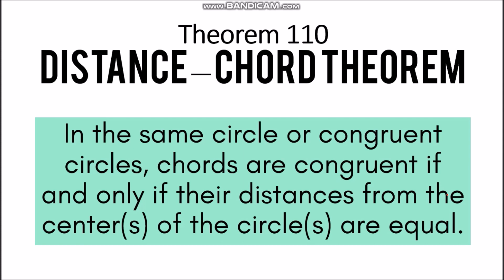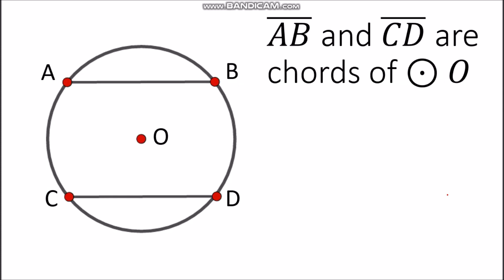When we say equal distances, that means they are equidistant. So if the chords have the same distance from the center of the given circle, then the chords must be congruent with one another, and vice versa. For example, you have circle O with segment AB and segment CD, which are chords. We put a segment from AB going to the center and from the center going to CD, naming these points E and F.